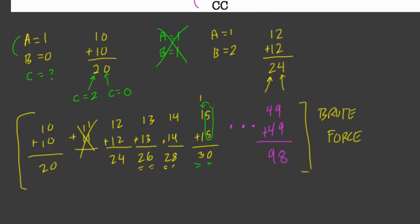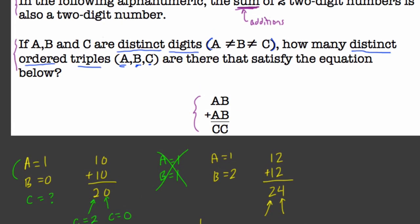So first of all, let's talk about the answer. My answer is that there are no distinct ordered triplets, right? The answer is, in fact, zero. This will never happen. And there are two ways to look at it.